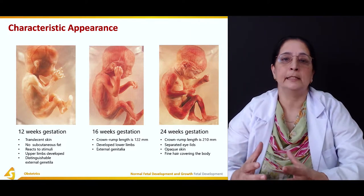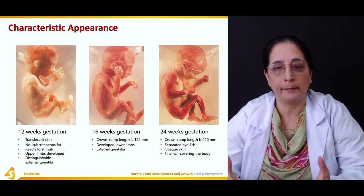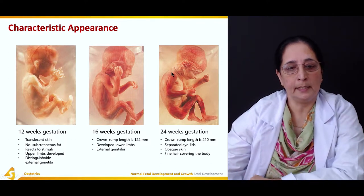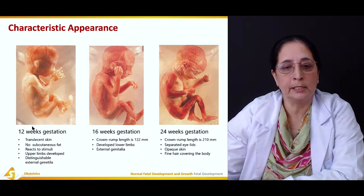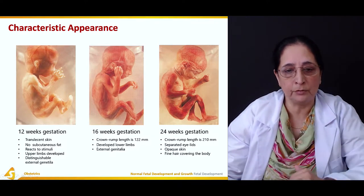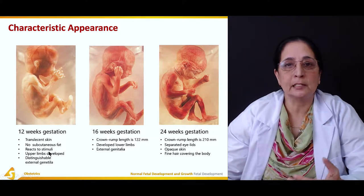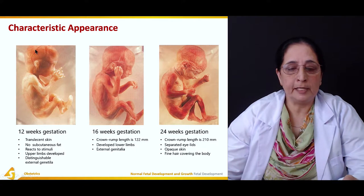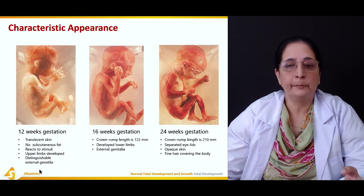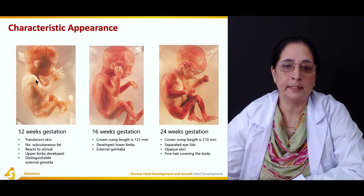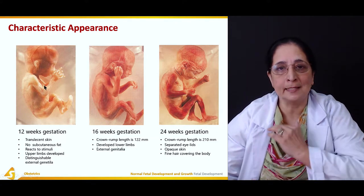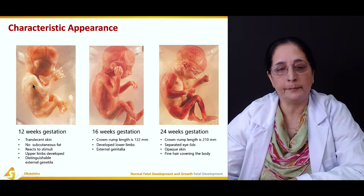Next, some characteristic appearances of the developing fetus at different gestational ages. At 12 weeks gestation, the skin is translucent — thin and see-through — with no subcutaneous fat or adipose tissue. The fetus reacts to stimuli, the upper limbs are fully developed, and distinguishable external genitalia are present.